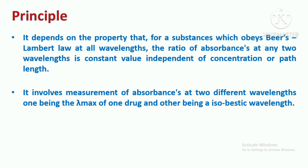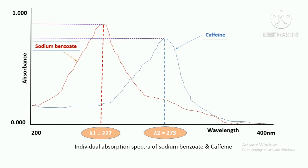The second statement is that this method involves the measurement of absorbances at two different wavelengths: one being the lambda max of one drug and the other being the isobestic wavelength. This concept of isobestic wavelength, also known as isoabsorptive wavelength, plays an important role. These two statements are very important with respect to the absorbance ratio method, and we will understand them better with the following figure.